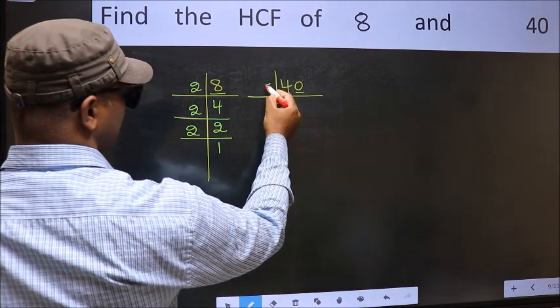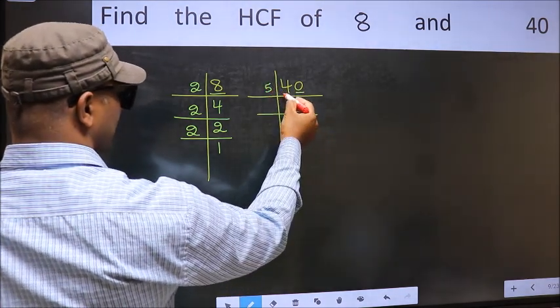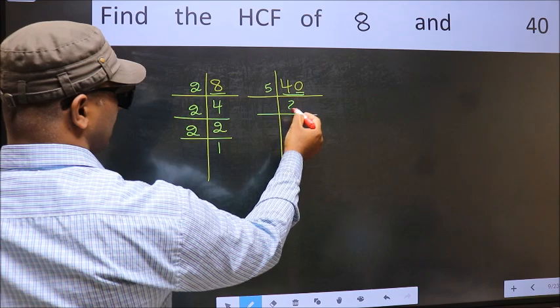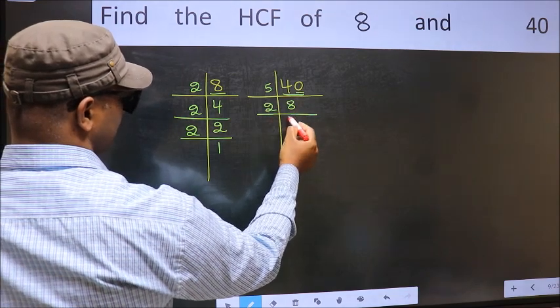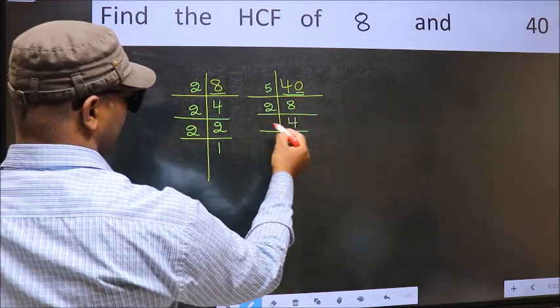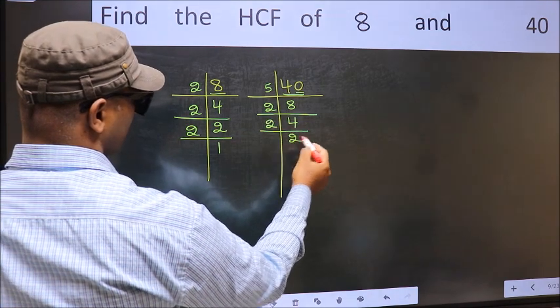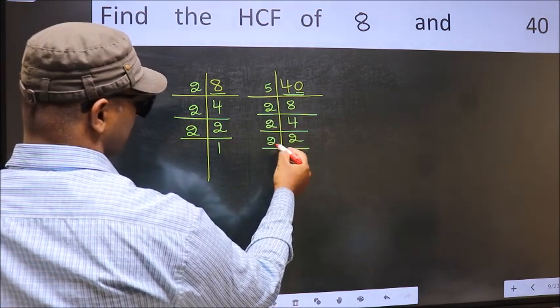Last digit 0, so take 5. When do we get 40 in 5 table? 5 times 8 is 40. Now 8 is 2 times 4. 4 is 2 times 2. 2 is a prime number, so 2 times 1 is 2.